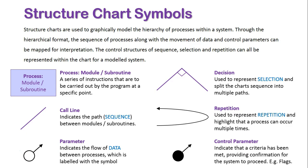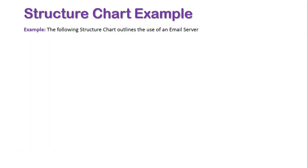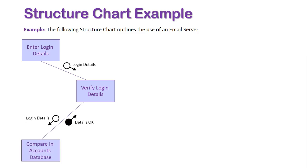Let's look at an example of an actual structure chart. The following structure chart outlines the use of an email server. To start off we need to enter our login details. The data moving into the system is the login details. The next process is the verification of these details. We need to verify these details and compare them against an accounts database. Once they are verified we then send back a control parameter which says the details are okay, you can proceed.